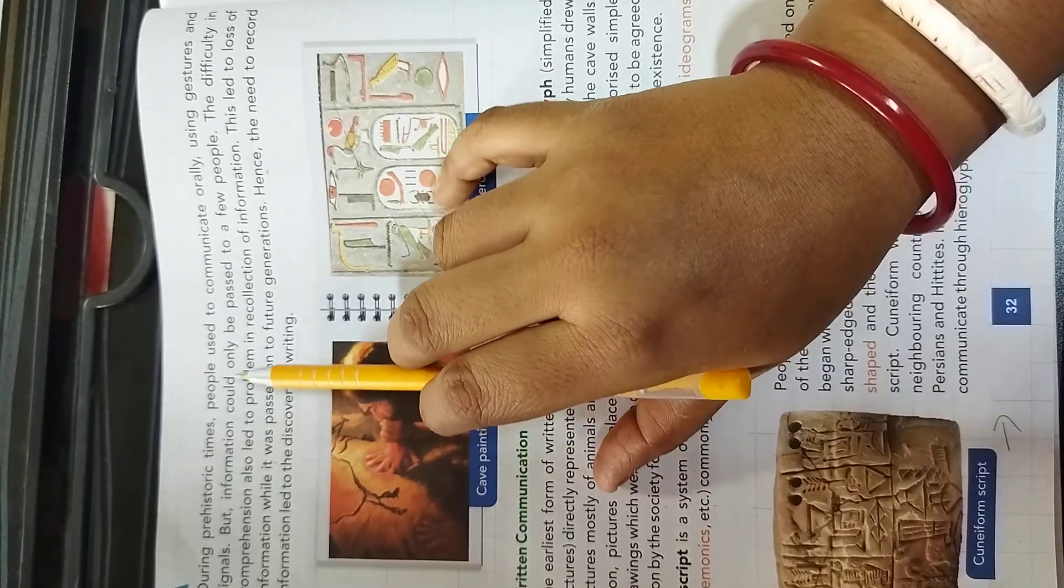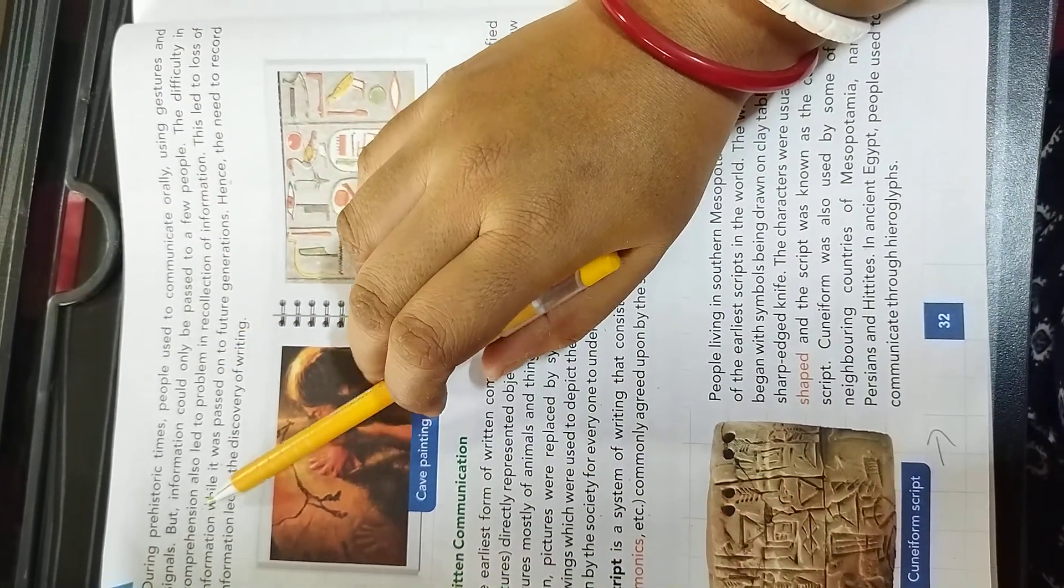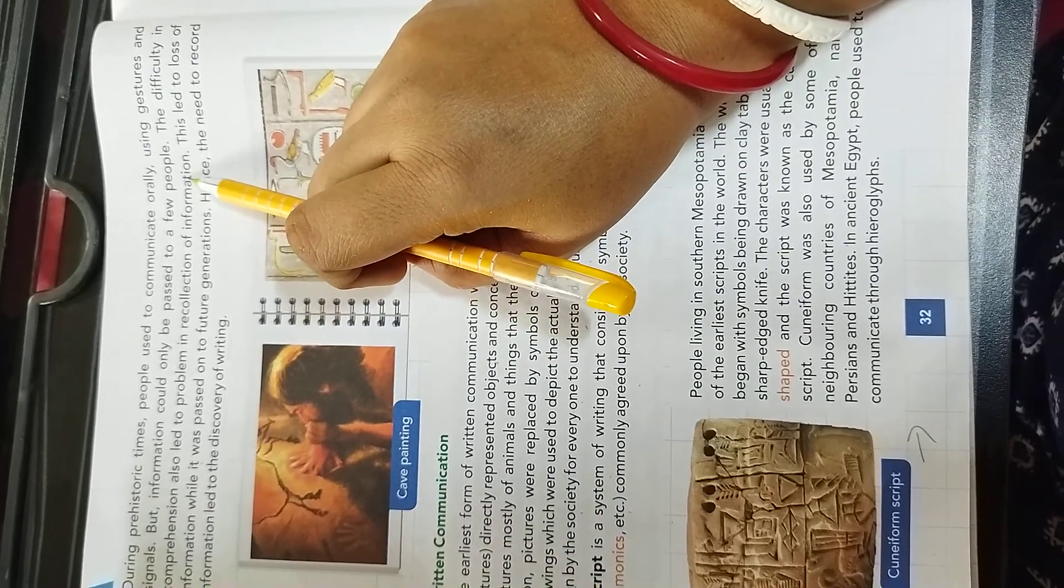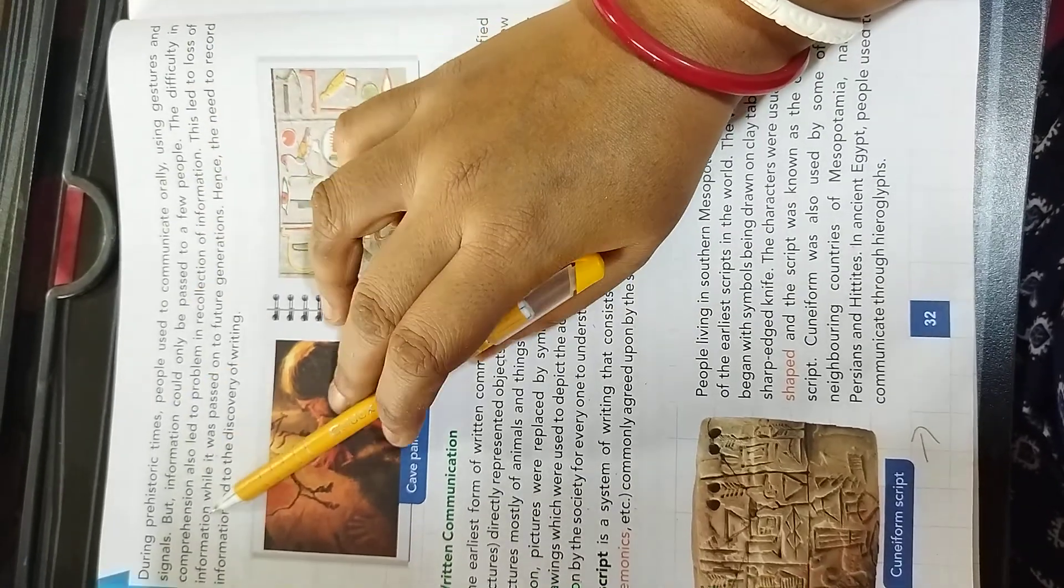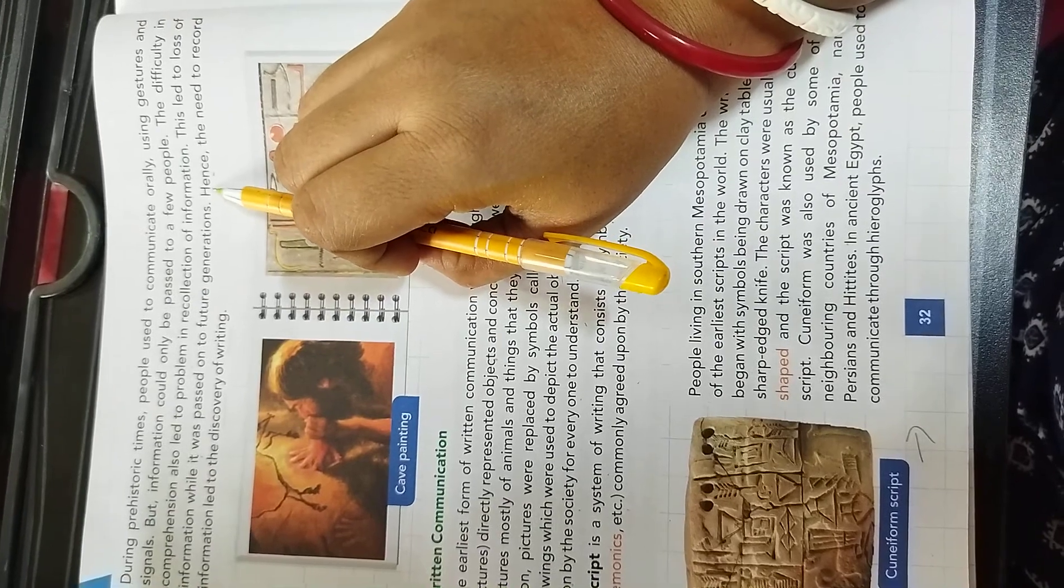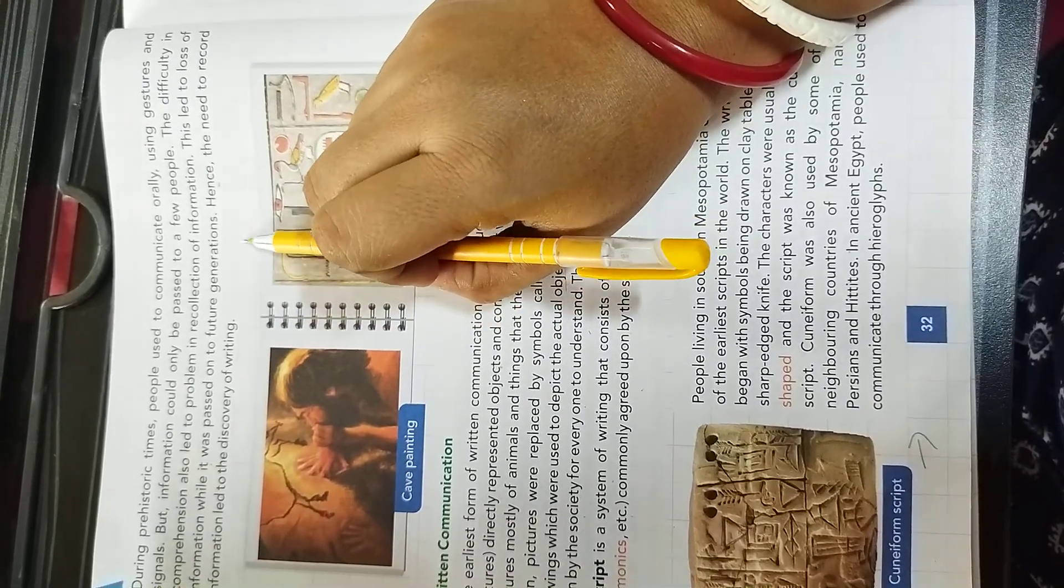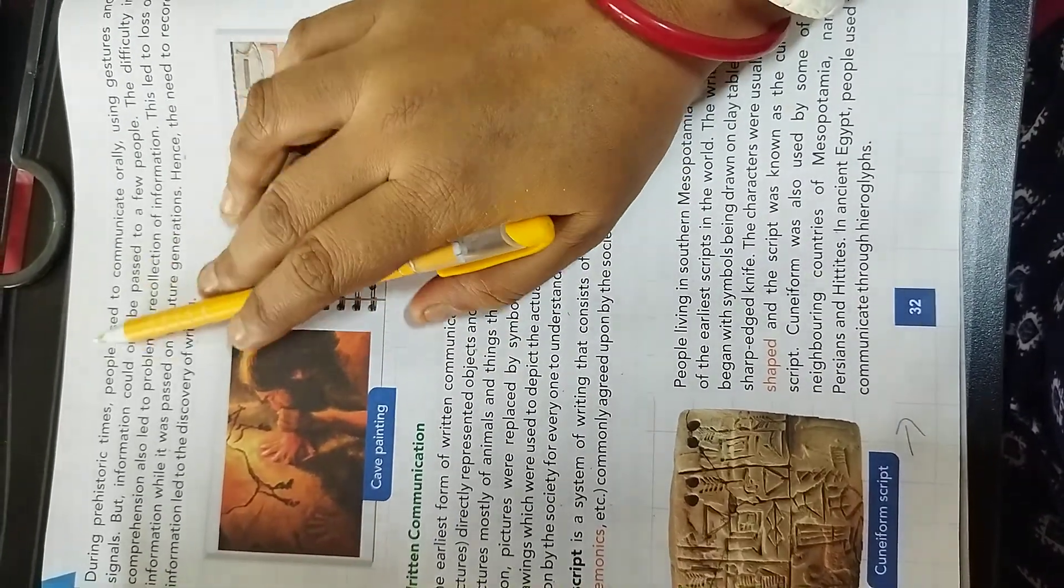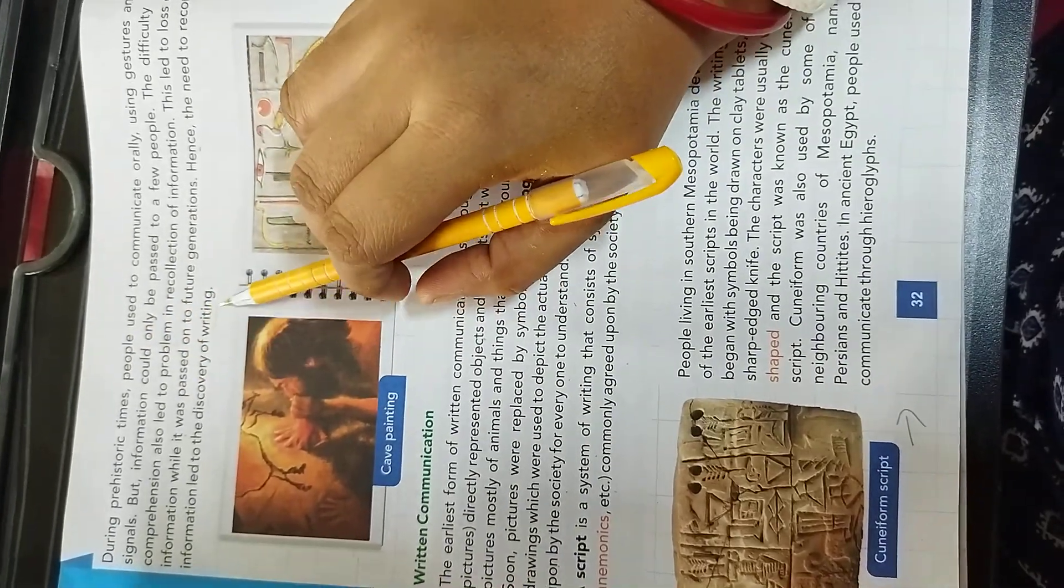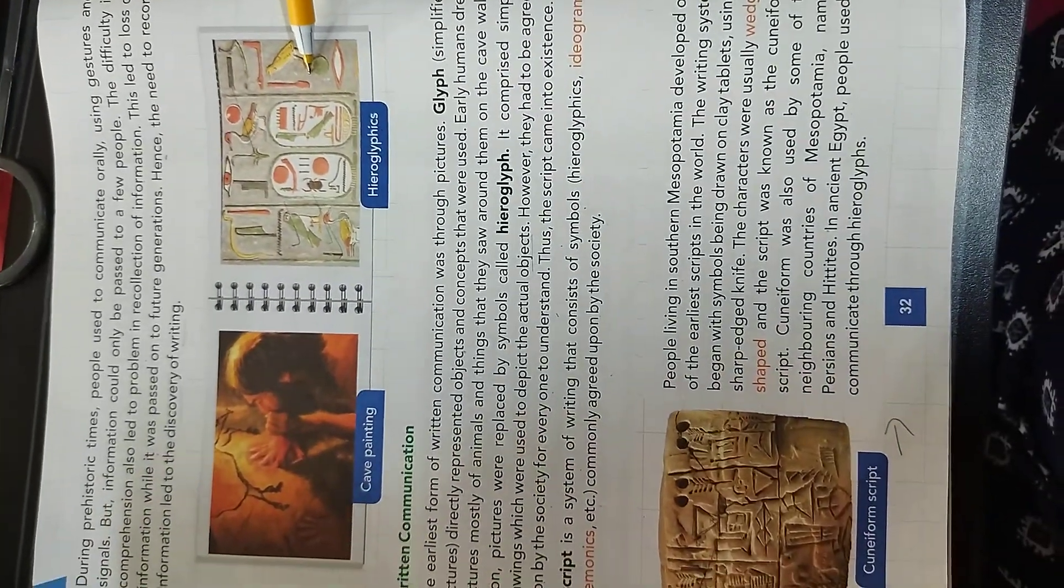During prehistoric times, people used to communicate orally using gestures and signals. But information could only be passed to a few people. The difficulty in comprehension also led to problem in recollection of information. This led to loss of information while it was passed on to future generation. Hence, the need to record information led to the discovery of writing. This is the painting of cave painting. And this is a hieroglyphic picture.